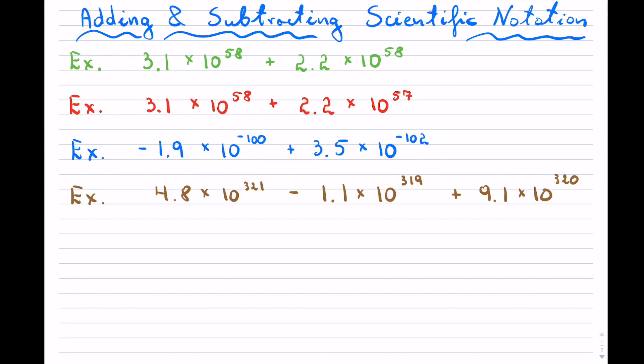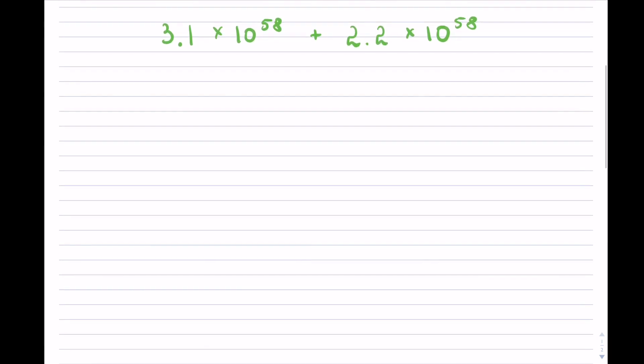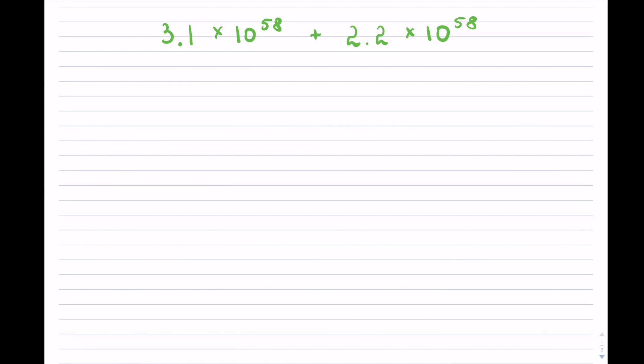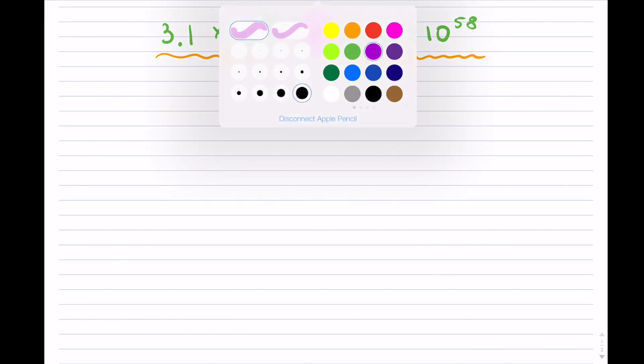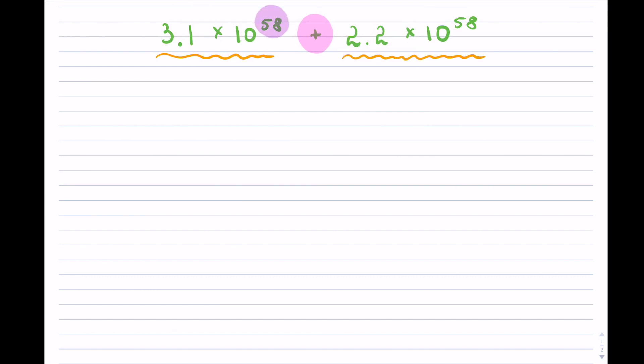First example, which is this one right here, is the easiest one but it will underline what is needed for this process. I have two numbers that are in scientific notation and I am trying to add them. In addition or subtraction, the key item is that you want to have the exponent of your base 10 to be identical.